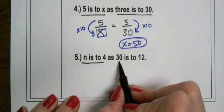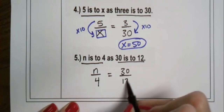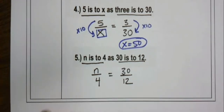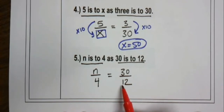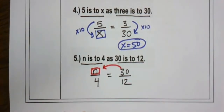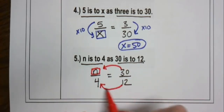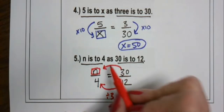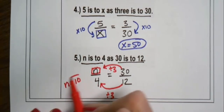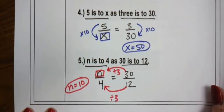N is to 4 as 30 is to 12 — set up as N/4 = 30/12. Do you see a relationship? Notice that our missing values are on the left, so we want to get from 30 back to N. Look at 12: how do I get from 12 to 4? It's dividing by 3. So I do the same thing to the top: 30 divided by 3 gives N equals 10. Here I used the horizontal factor of change to solve this one.